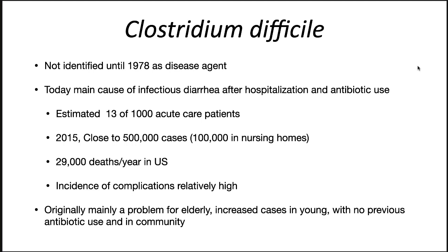C. difficile was not identified until 1978 as a disease agent. Today, it is the main cause of infectious diarrhea after hospitalization and antibiotic use. It is estimated that 13 of 100,000 acute care patients will be infected with this pathogen. Close to 500,000 cases were reported in 2015, 100,000 in nursing homes. It is a significant cause of death in the country, with 29,000 deaths per year in the U.S. Incidence of complications is relatively high, and there are increased cases in young people with no previous antibiotic use and in the community, so it seems to be becoming more of a problem.